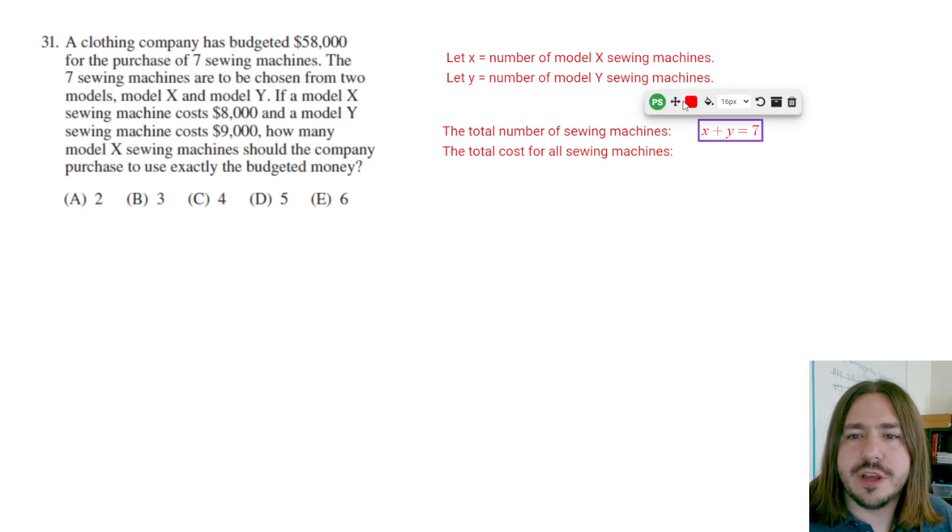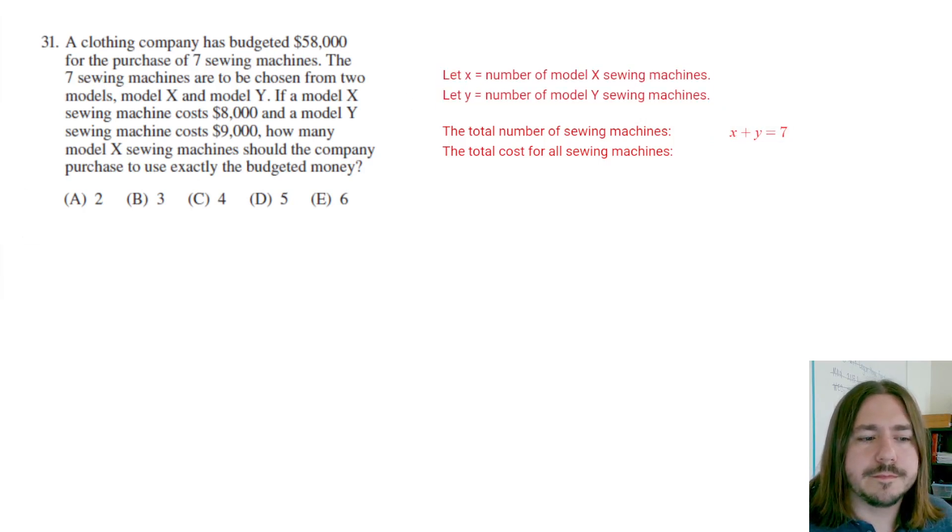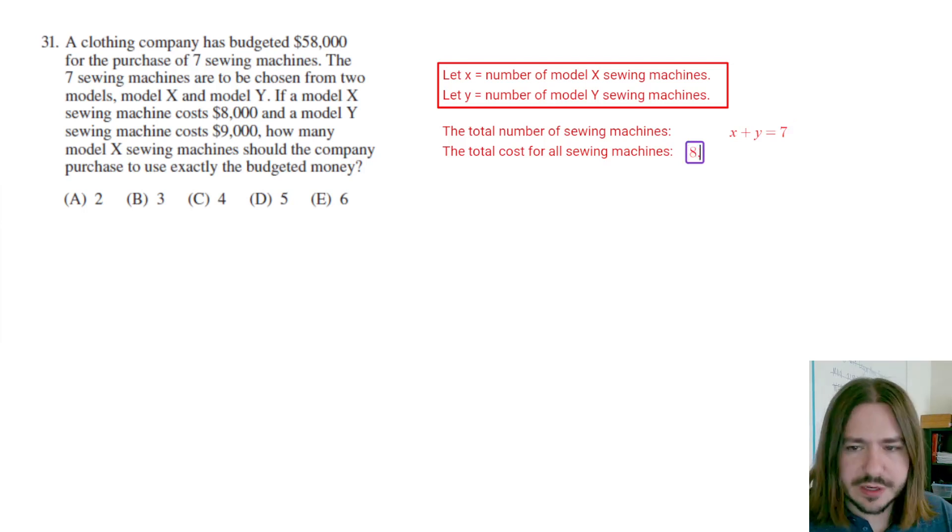Our second equation has to do with the total cost, and since X and Y, those variables are determined, we don't want to change what X and Y represents here. So for the total cost, we know that the Model X sewing machine costs $8,000, and the Model Y costs $9,000. So we're going to multiply the cost per sewing machine by the number of sewing machines we're buying. If each Model X sewing machine is $8,000, for the total price we're going to multiply X times $8,000. Now for the Model Y sewing machines, each one of those is $9,000, so we'll multiply $9,000 by Y, and the total cost should be exactly $58,000 as specified by the problem.